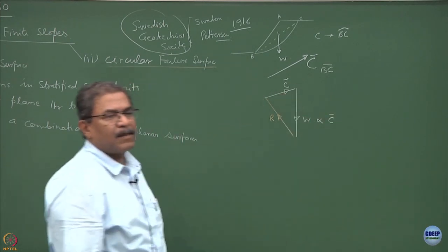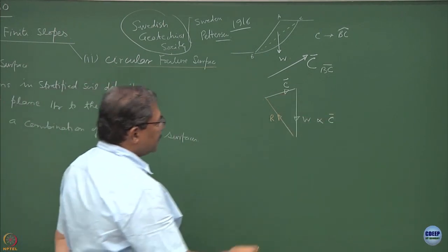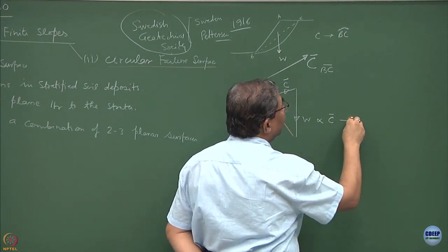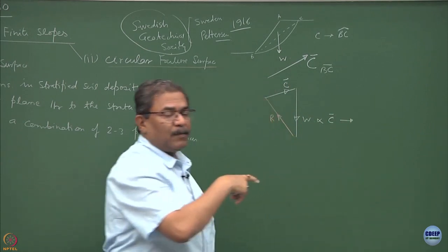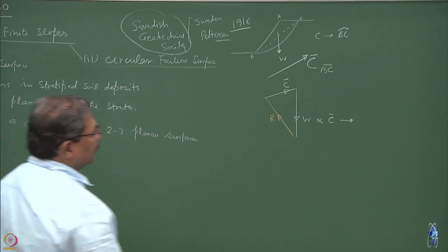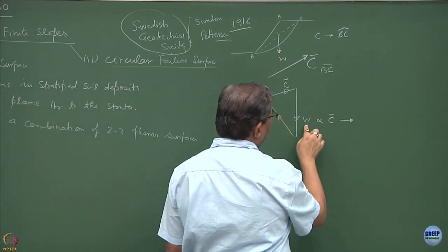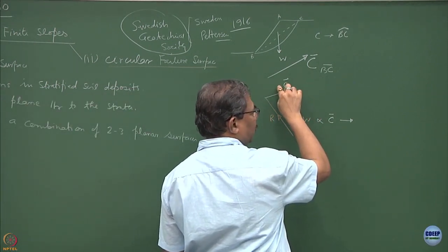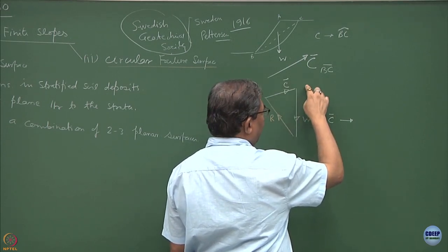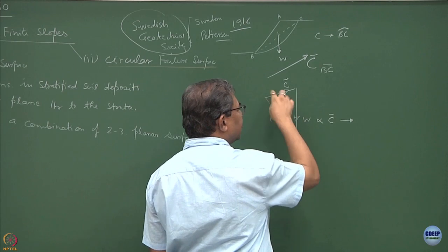Basically, W is directly proportional to C. What is C? The cohesion which is getting mobilized on the surface. That means I can always say that W controls the magnitude of C, the direction is known. Lower the value of W, lower C is required.